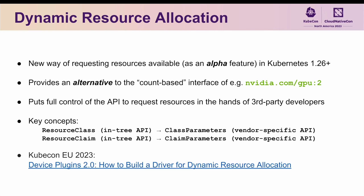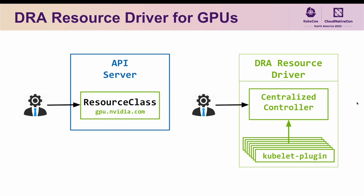In this talk, I won't go much further into the details of DRA itself and how it works under the hood, but I encourage you to watch my talk from KubeCon EU last April if you'd like to learn more. So assuming a cluster admin has enabled DRA and deployed the necessary DRA resource driver for GPUs onto a cluster, what does a user actually have to do to request access to a GPU?